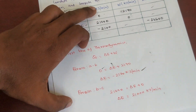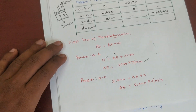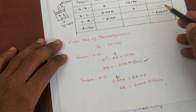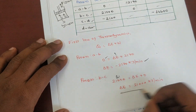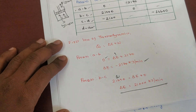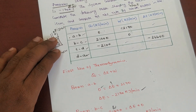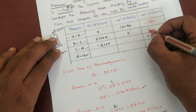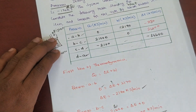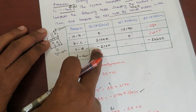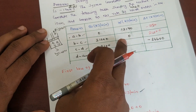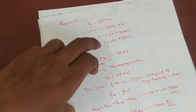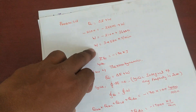For process B-to-C: Q is 21000 kJ/min and W is equal to zero, so the final answer is ΔU equal to 21000 kilojoules per minute. For process C-to-D: Q is minus 2100, ΔU is minus 36600, and the final W value is positive 34500 kilojoules per minute.